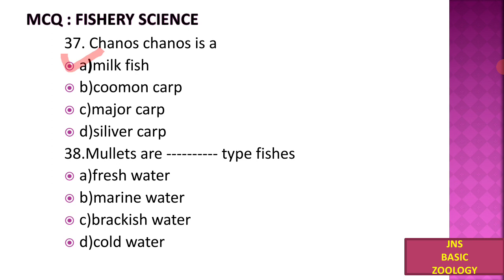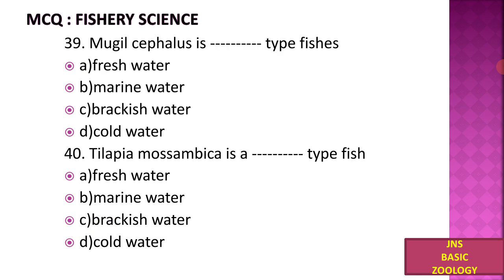Mullets are which type of fish? A) Freshwater, B) Marine water, C) Brackish water, D) Cold water. Mugil cephalus is a brackish water fish. Mullets are brackish water fish.